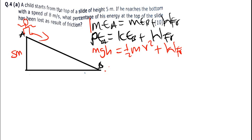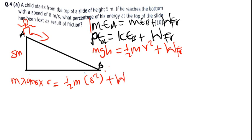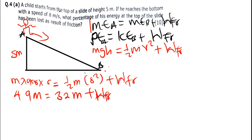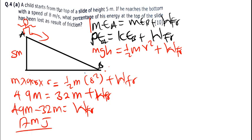Plugging in values: m × 9.8 × 5 = ½ × m × 8² + work done by friction. This gives 49m = 32m + work done by friction. Shifting terms: 49m − 32m = work done by friction, so 17m joules equals the work done by friction.